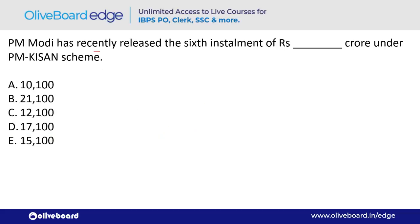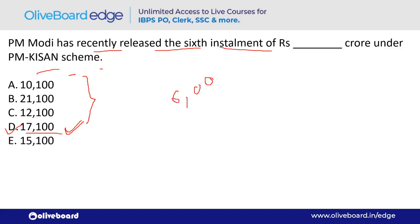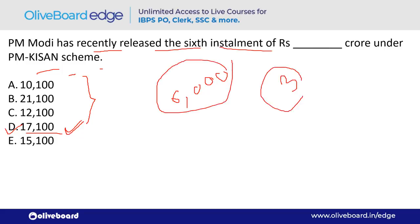PM Modi recently released the 6th installment of how many crore under PM Kisan Scheme? The amount is ₹17,100 crore — option D. Under PM Kisan Scheme, farmers receive ₹6,000 annually in three equal installments.